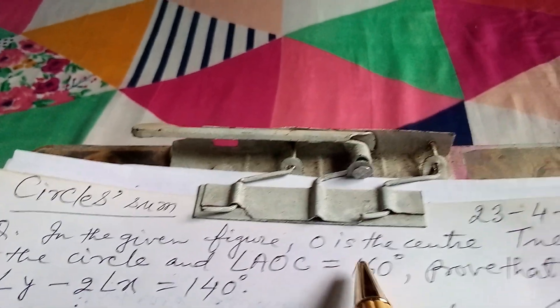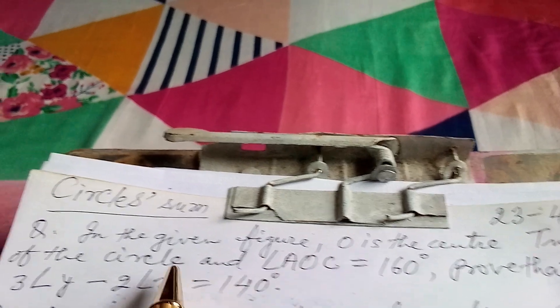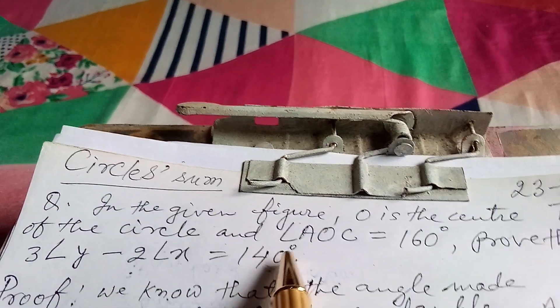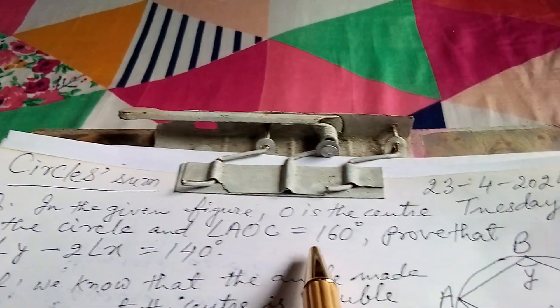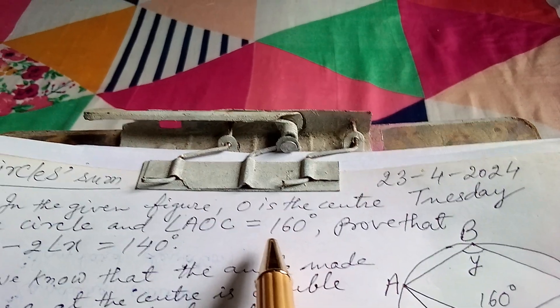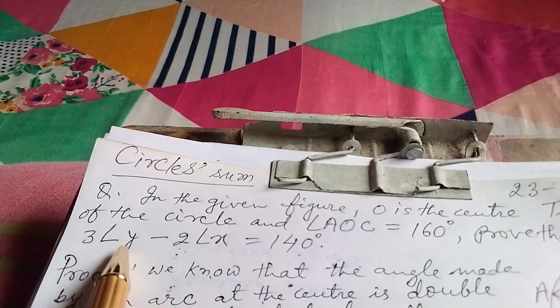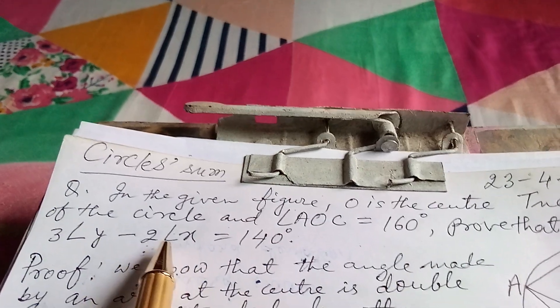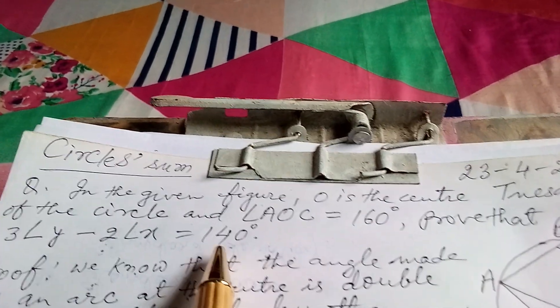in the given figure, O is the center of the circle and angle AOC equals to 160 degrees, prove that thrice angle Y minus thrice angle X equals to 140 degrees.